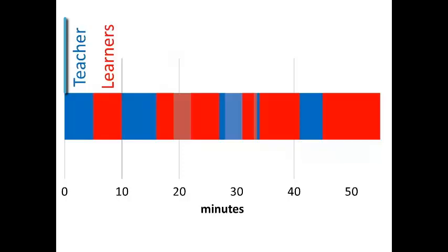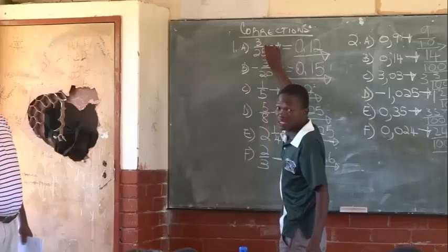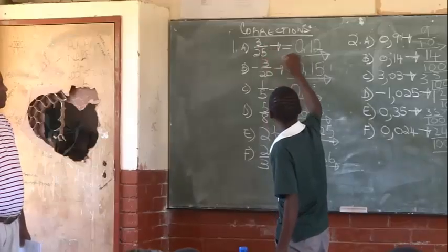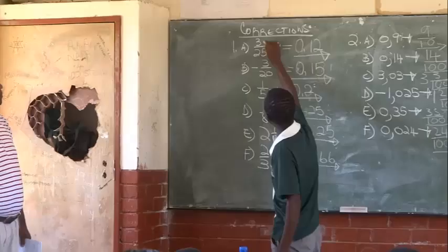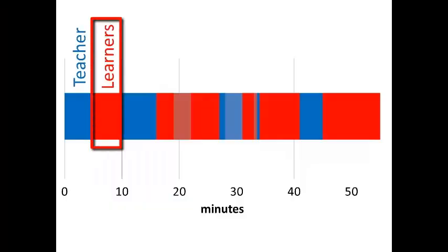In the first five minutes Mr. Potsane greets and settles the class and writes the homework questions on the board. He now gets two learners to answer these questions on the board. Both write on the board at the same time to save time. He then asks each learner to explain only one of the questions to the class. All this takes only five minutes.